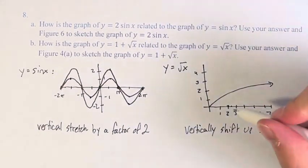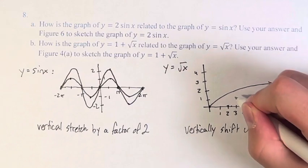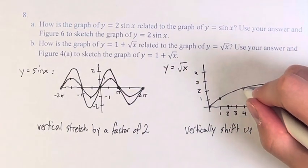So we have some points on y equals the square root of x that will be helpful for this. So we have 0, 0, 1, 1, and 4, 2.